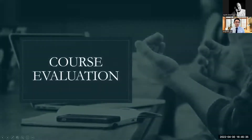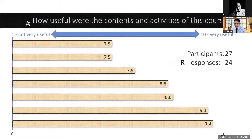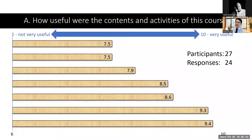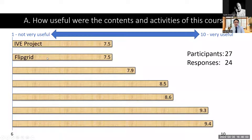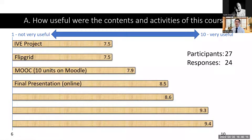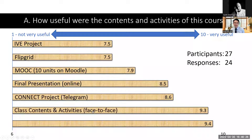So a lot of activities! The first question: how useful were the contents and activities of this course? Students rated 1 to 10. In total there were 27 participants and I managed to get 24 responses. The things they found least useful were the IVE project and Flipgrid — there was not a lot of interaction there — followed by the Moodle content. They liked the final presentation. It was done online because during the face-to-face period we had to change it to online due to the situation in Okinawa from the pandemic. They also enjoyed the Connect project using Telegram, and they loved the face-to-face class content.